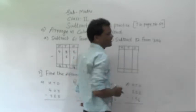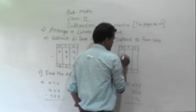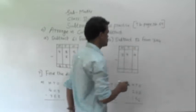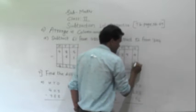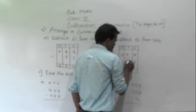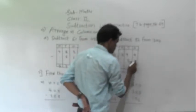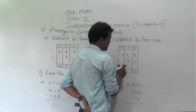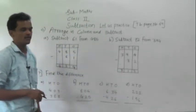Next example: subtract 82 from 394. Write the big number 394 on top and 82 below, starting from the ones place — 2 in the ones column and 8 in the tens column. Now subtract: 4 minus 2 is 2, 9 minus 8 is 1, and hundreds has no digit so consider 0, giving 3 minus 0 is 3. So the answer is 312.